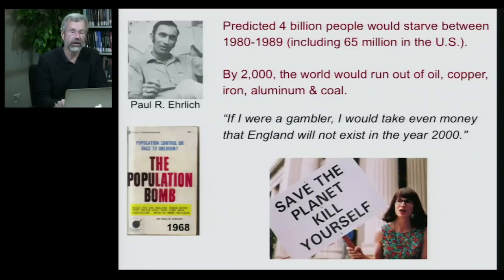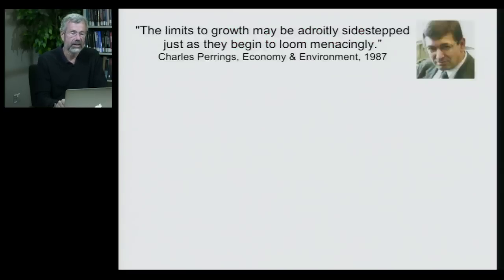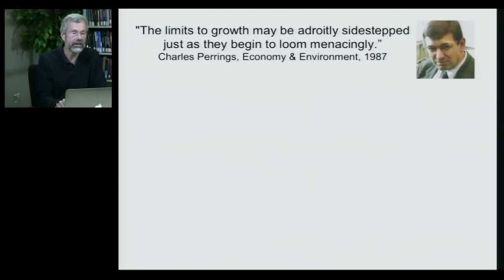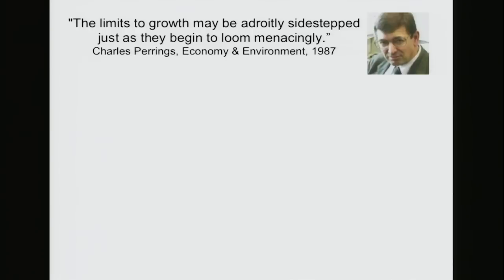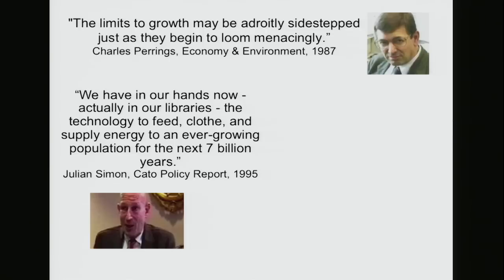On the opposite side of this argument, which has been raging for decades, we have businessmen and economists who say: 'Don't worry — Malthus is just as wrong as Ehrlich.' Charles Perings, an economist, wrote in 1987 that 'the limits to growth may be adroitly sidestepped just as they begin to loom menacingly.' And Julian Simon said: 'We have in our hands now — actually in our libraries — the technology to feed, clothe, and supply energy to an ever-growing population for the next seven billion years.'